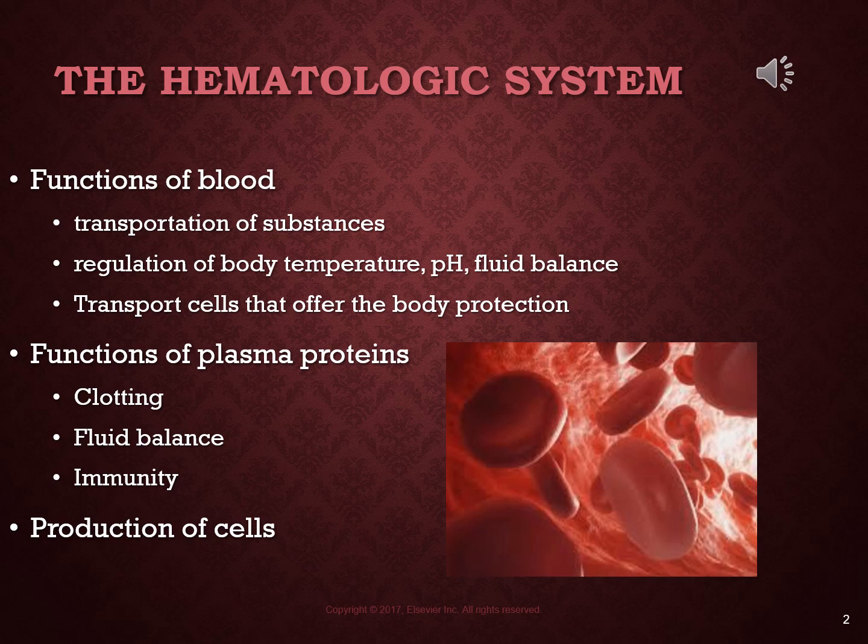All formed elements in the blood are produced from stem cells in the red bone marrow. You have red bone marrow in your flat bones, in the irregular bones, and the epiphyses of your long bones — that's where the stem cells are and where all blood cells are formed. They all come from these same hematopoietic stem cells.